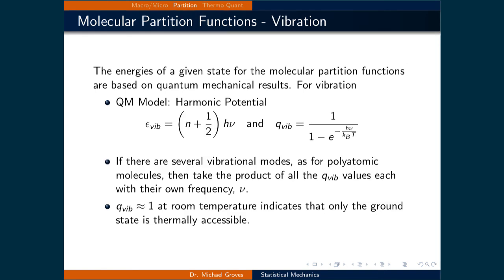The third type is vibrational motion. The harmonic oscillator is the model used to derive the energy expression. Substituting this into the partition function and simplifying gives 1 over 1 minus e raised to the power of h-nu divided by the Boltzmann constant times T, where nu is the frequency of the vibration. For polyatomic molecules with several vibrational modes, take the product of all the partition function values, each with their own frequency nu. A vibrational partition function equal to 1 indicates that only the ground state is thermally accessible, which is typical at room temperature.